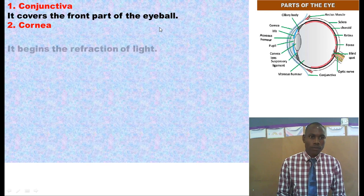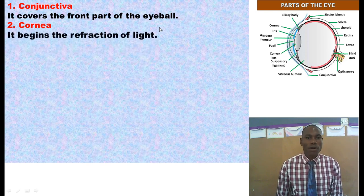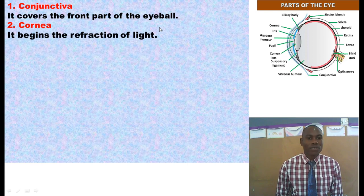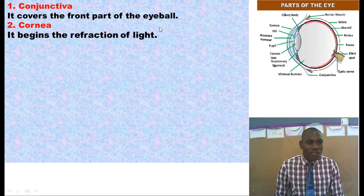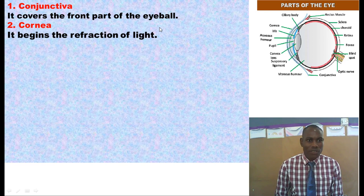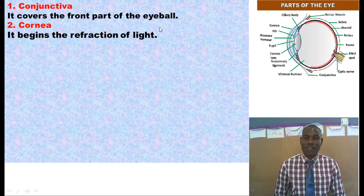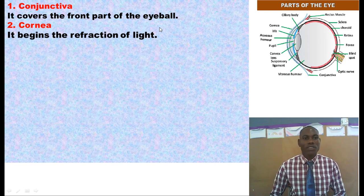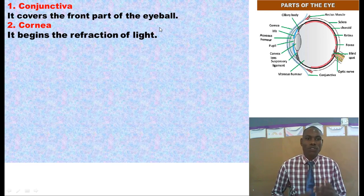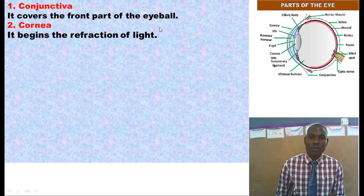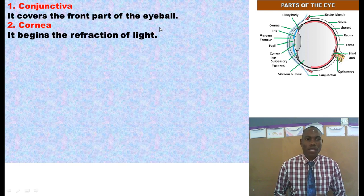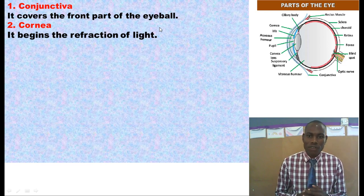The cornea is the front part of the eyeball and it is transparent — that means it lets in light. If the cornea were to be opaque, then it would not let in light. The major function of the cornea is that it begins the refraction of light. Refraction is the bending of light as it moves from one transparent medium to another of different densities. When light reaches the cornea, the cornea begins the refraction of light.